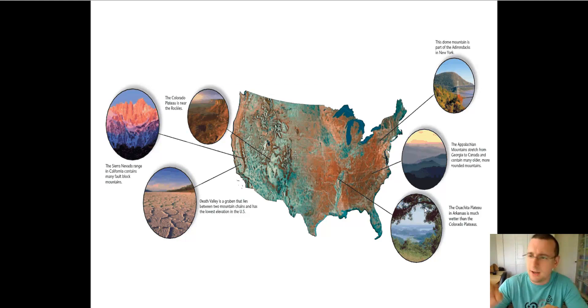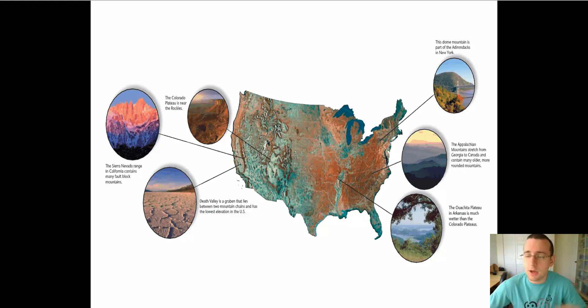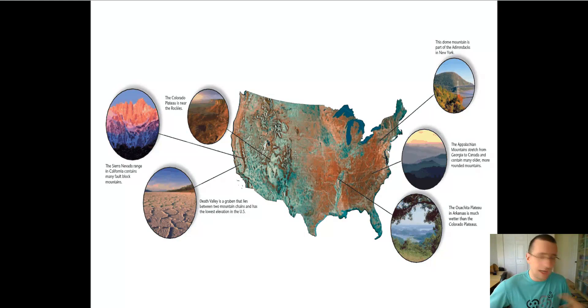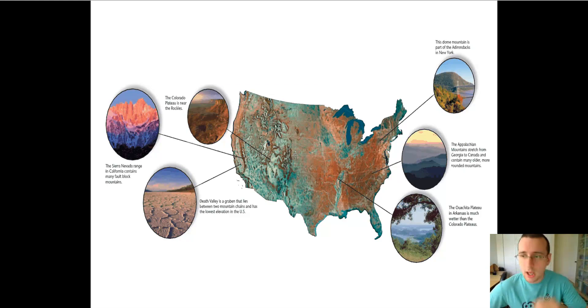The surface of the Earth is definitely not flat — it is deformed. What causes these deformations is a combination of things like erosion, weathering, uplift, subsidence, tectonic plate motions, and a lot of other things. We're going to be talking about these things in this lecture series: how does the crust of the Earth change with time?